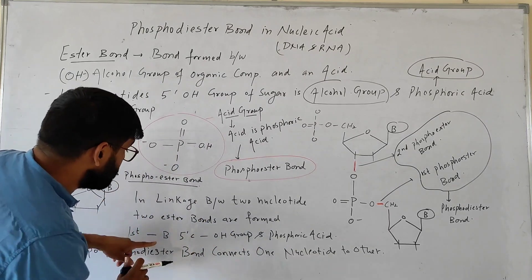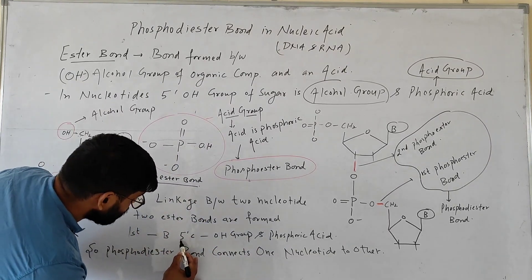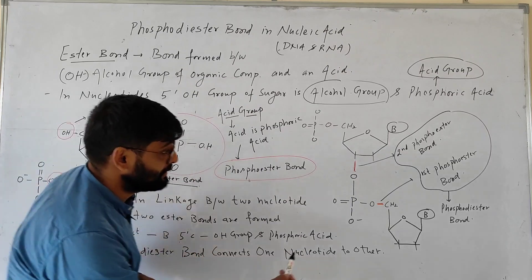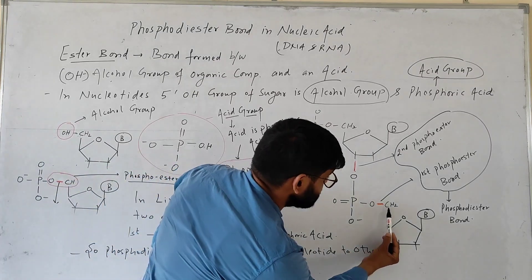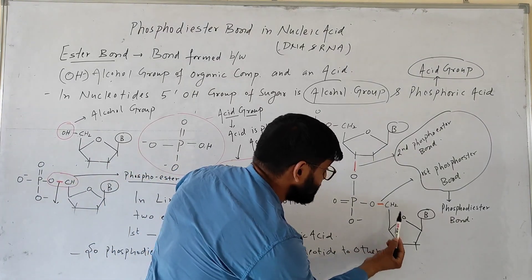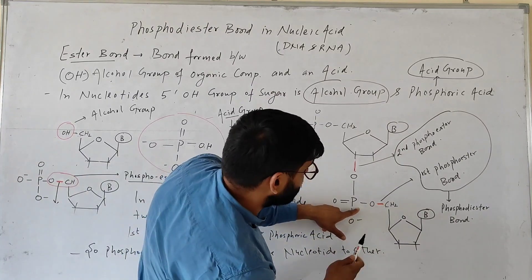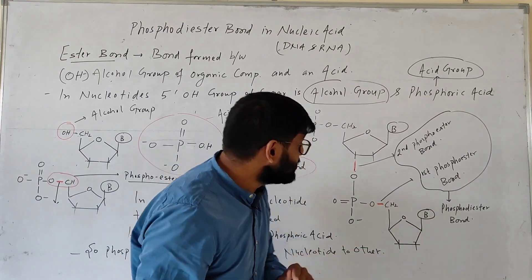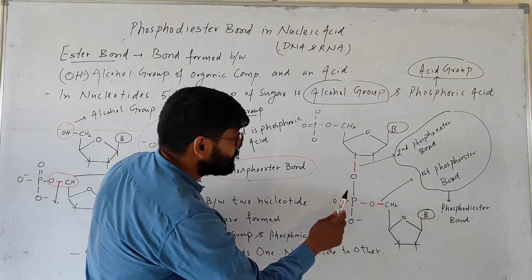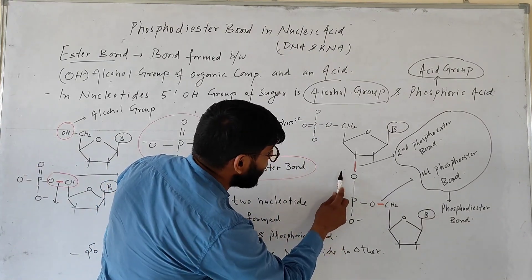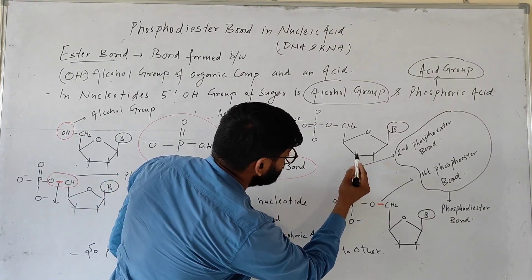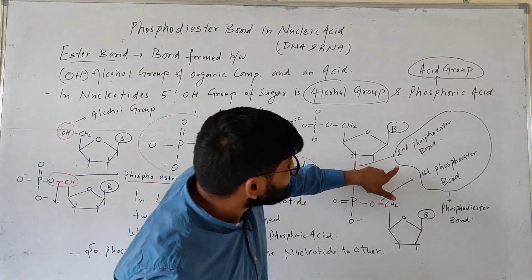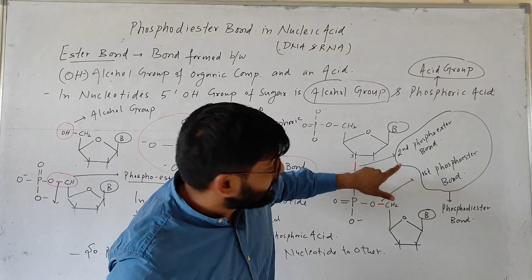The first bond is formed between the 5' carbon OH group of the sugar and phosphoric acid — this is the first phospho ester bond. The second bond is formed between phosphoric acid and the 3' carbon OH group — this is the second phospho ester bond.